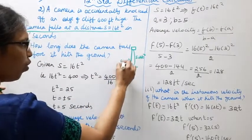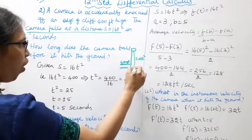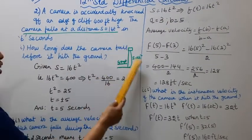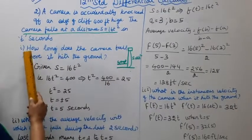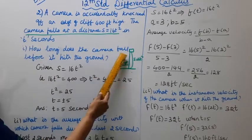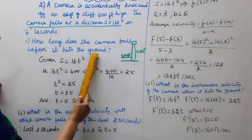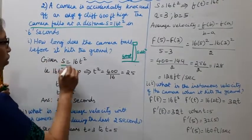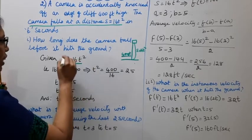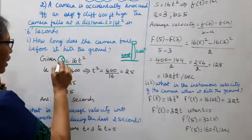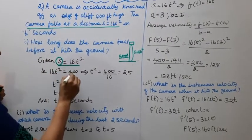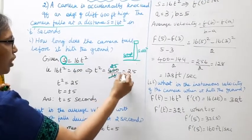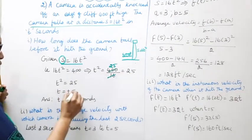The height of the camera is 400 feet. It falls at distance s equal to 16t squared in t seconds. To find the time, set s equal to 400: 16t squared equals 400, so t squared equals 400 divided by 16, which equals 25. Therefore t equals plus or minus 5.